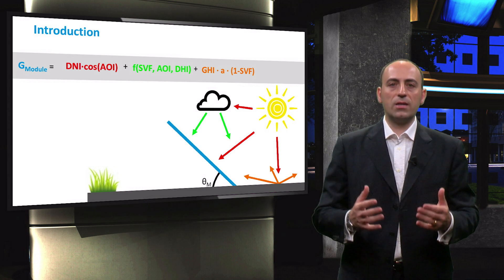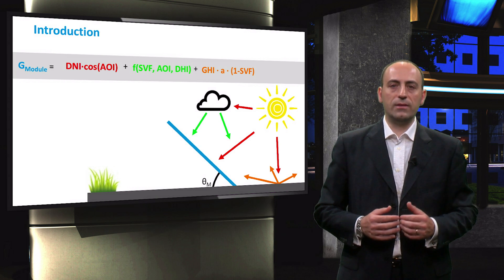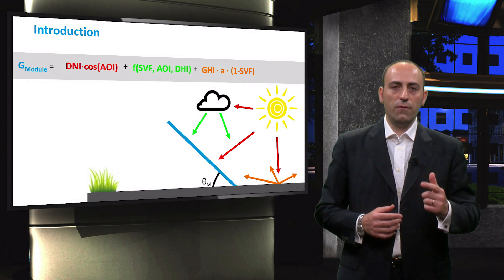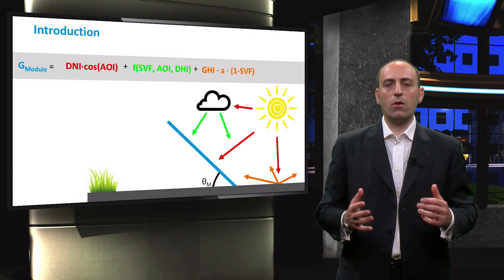In the previous video, we discussed the three different components of light: direct in red, diffuse in green, and albedo in orange.